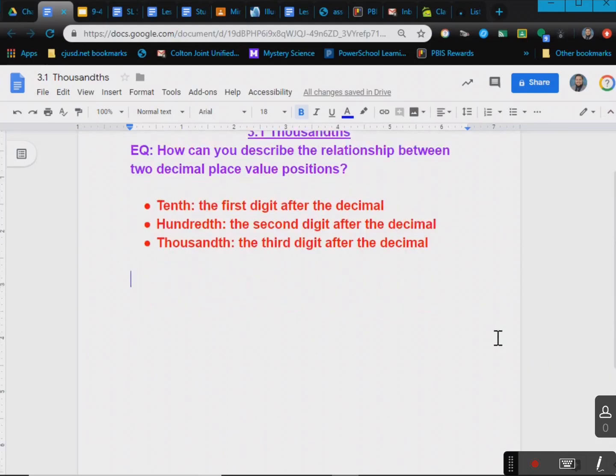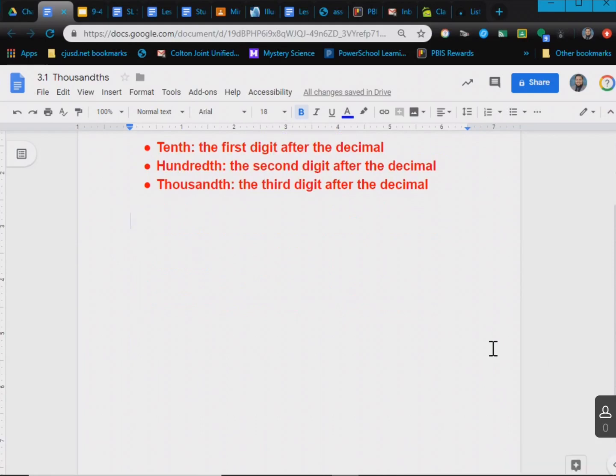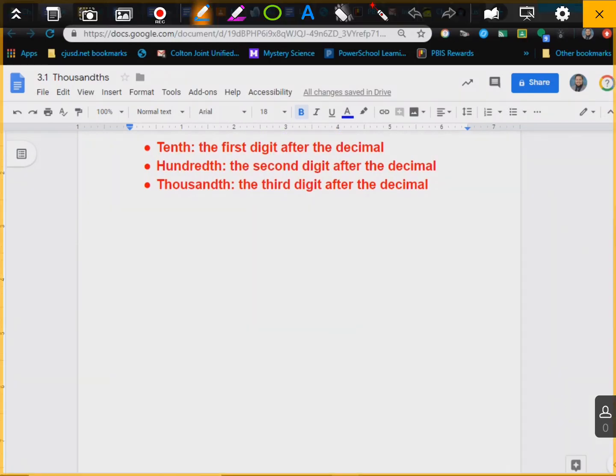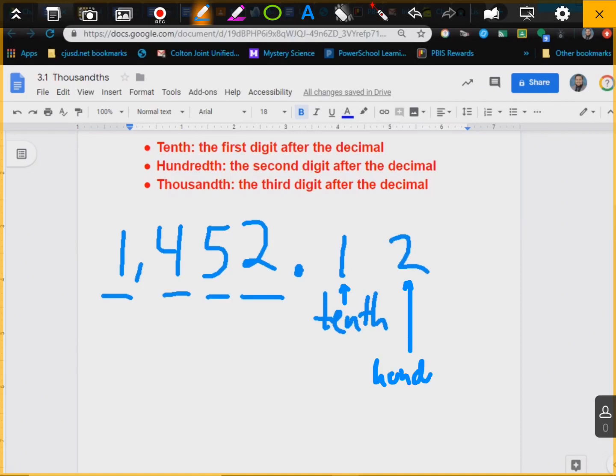Just like how we have, and I do want you to write this down, just like how we have 1,452, we have a one here, a ten, a hundredth, a hundredths and thousandths. Well, we have the same thing after the decimal. This would be the tenths. This would be the hundredths. I'm just going to make some arrows there so you guys know.